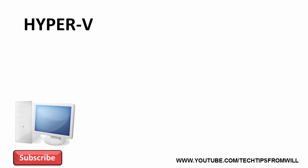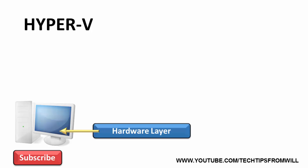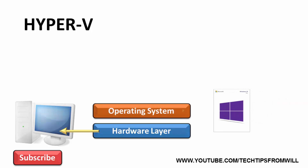First of all, imagine that you have a computer. This computer forms the hardware layer for our hypervisor. Next, you install the Windows 10 operating system onto the computer. So far this looks like a type 2 hypervisor setup, but bear with me — all will become clear. By default the Hyper-V feature is not installed, so you would think when it is installed, the hypervisor would be laid right on top of the operating system layer. However, this is not the case.